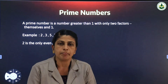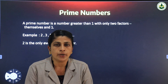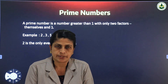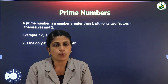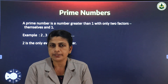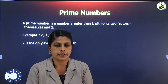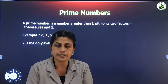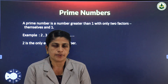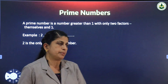A prime number is a number greater than 1 having only 2 factors. Therefore, 1 is not a prime number. Remember that 1 is not a prime number. A prime number must be a number greater than 1.